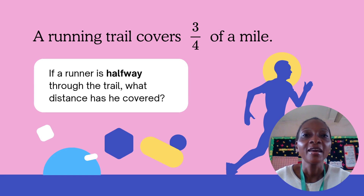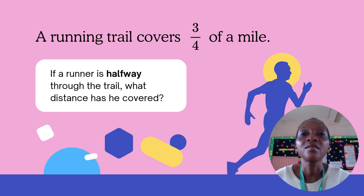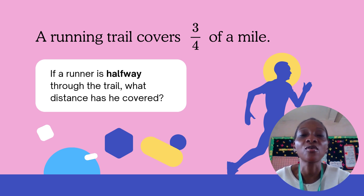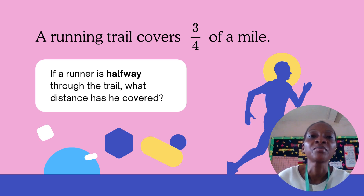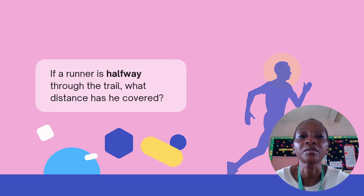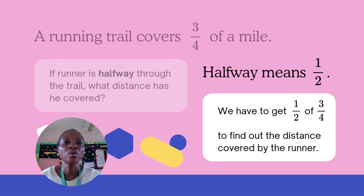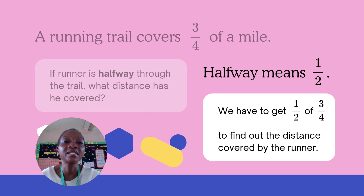As you can see, there's a man running. A running trail covers three over four of a mile. If a runner is halfway through the trail, what distance has he covered? Now, halfway means one over two, so we have to get one over two of three over four to find out the distance covered by the runner.